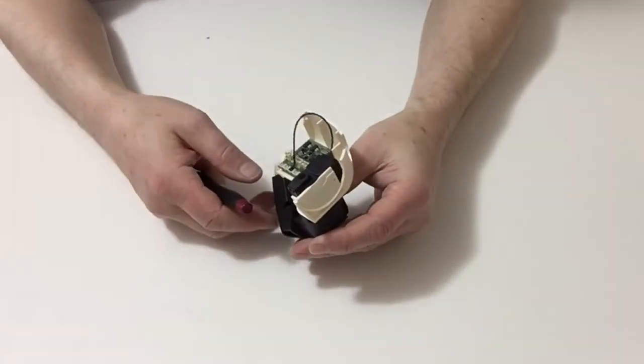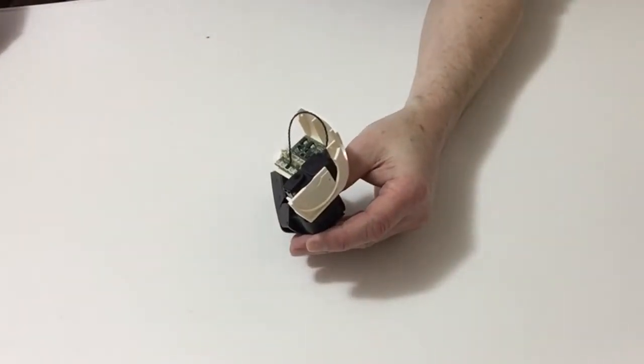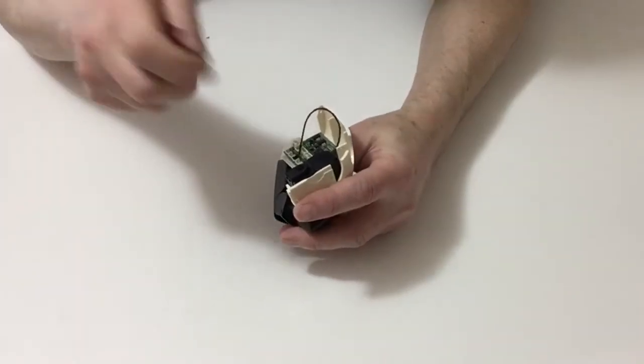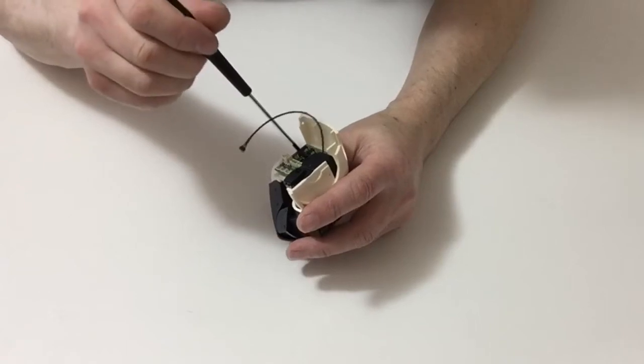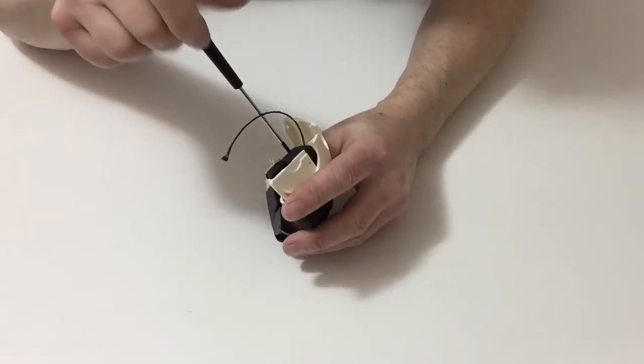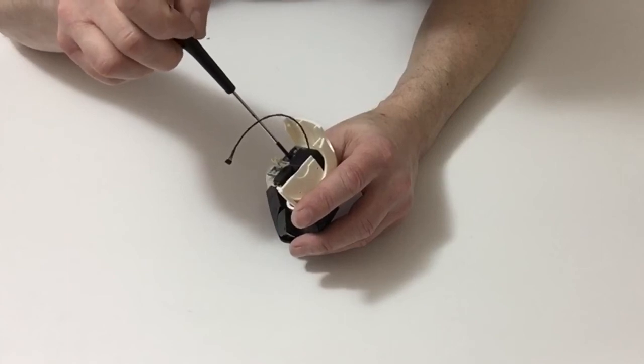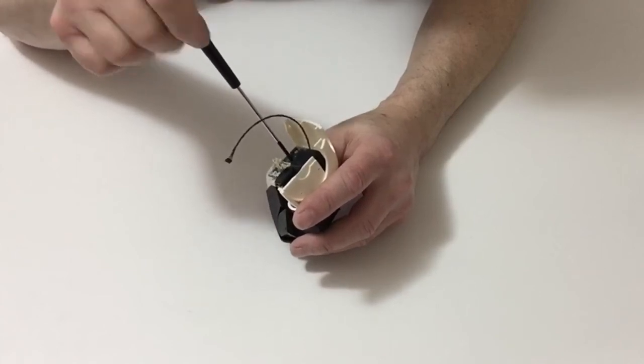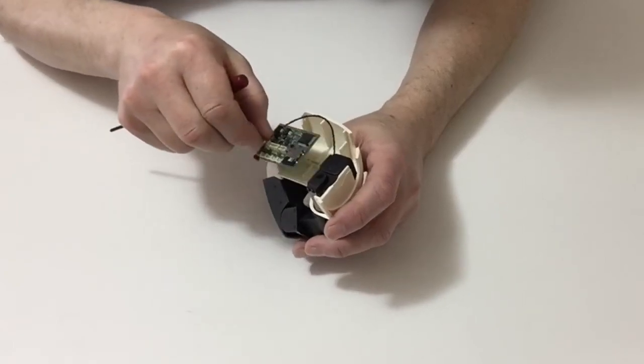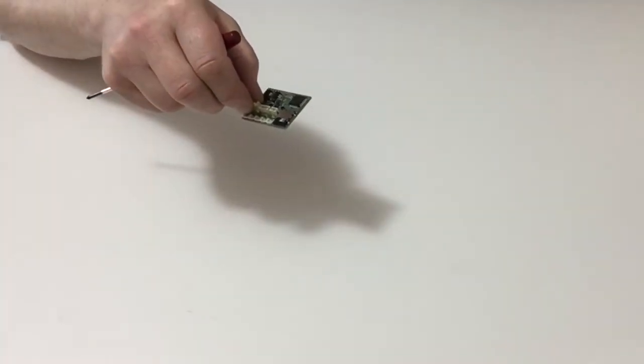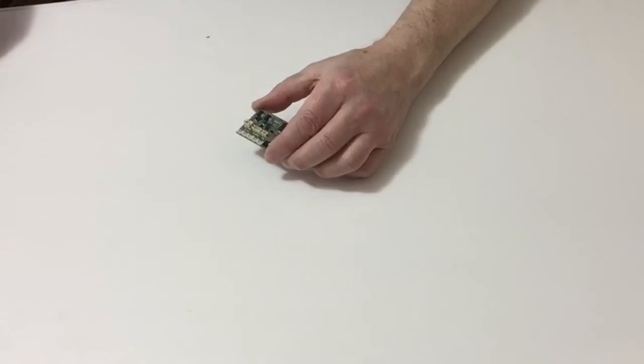Once again, we then need to get the tester from the right side. Carefully removing the connection, undo the two M2 4mm screws and carefully remove the board from Robbie's right arm assembly.